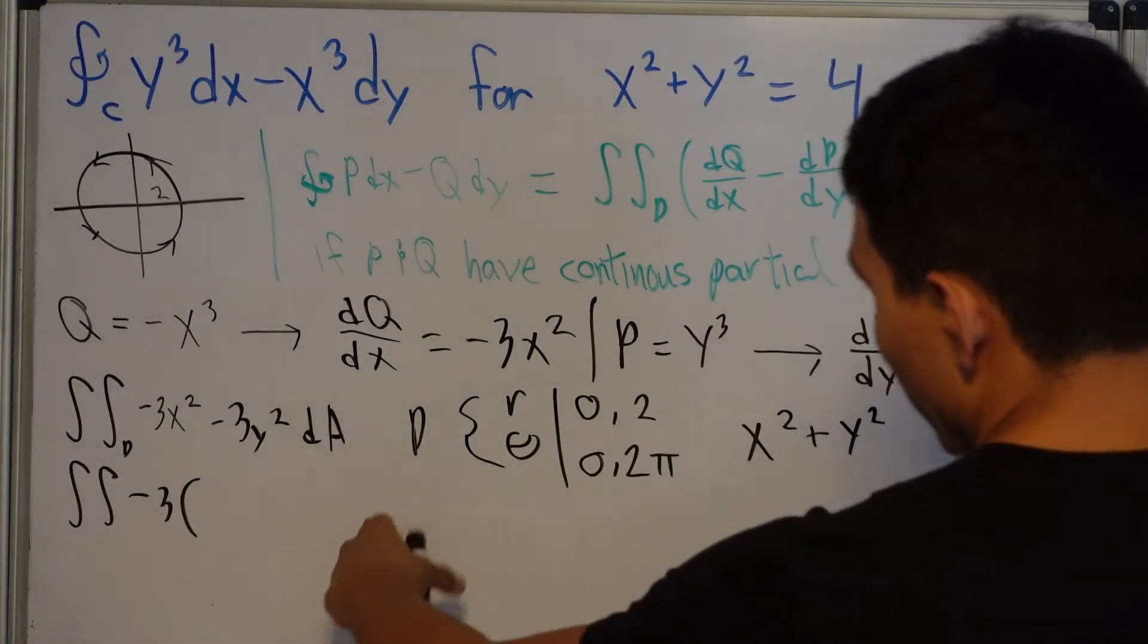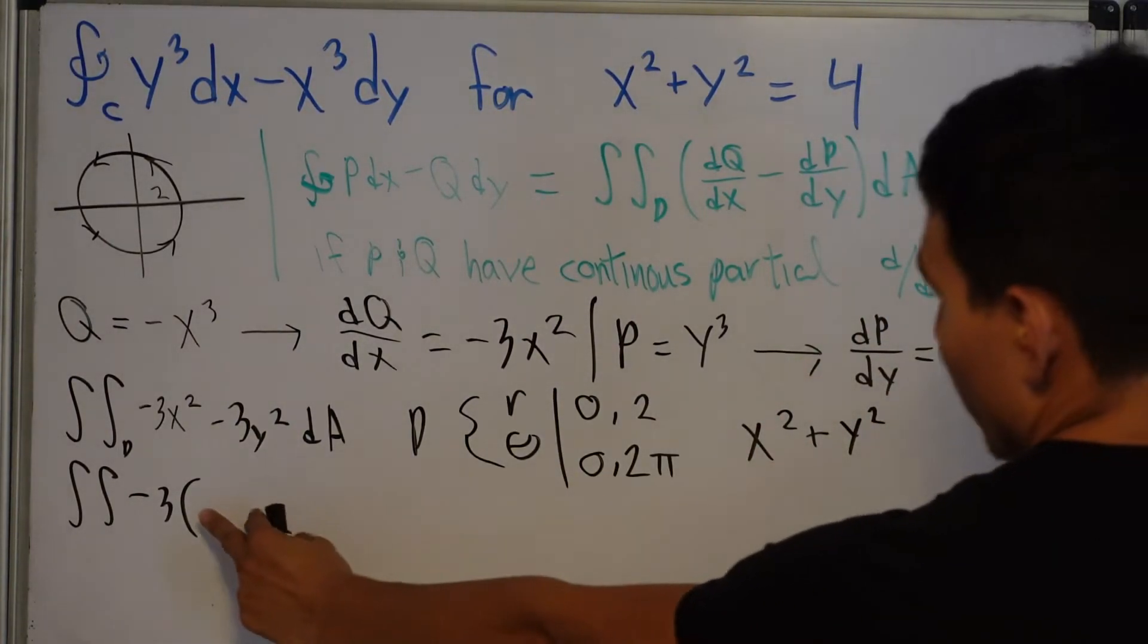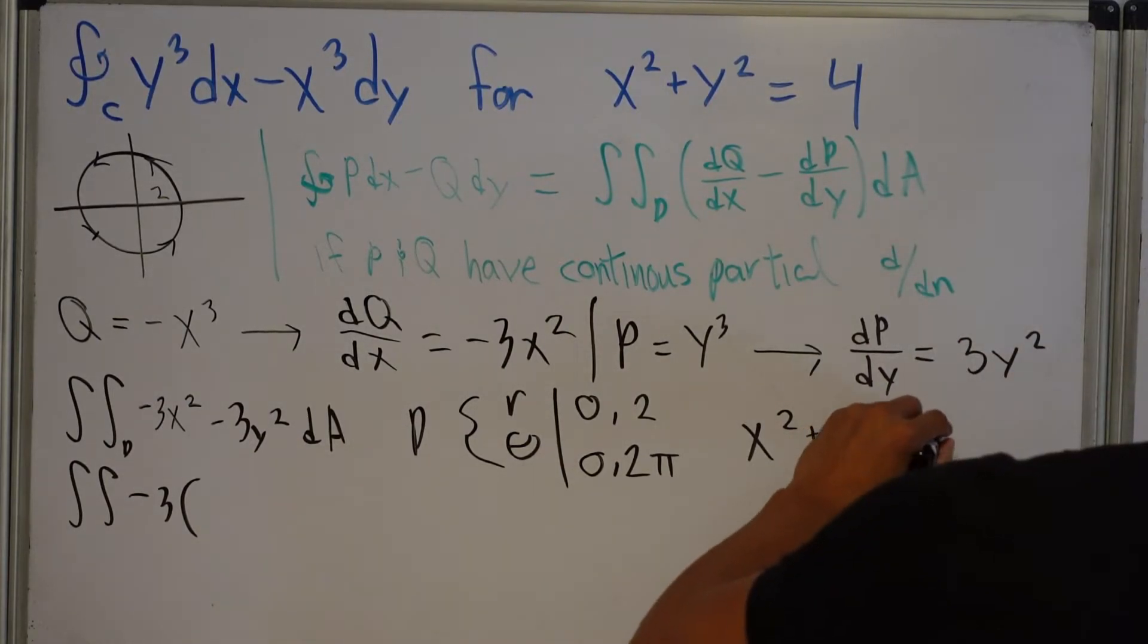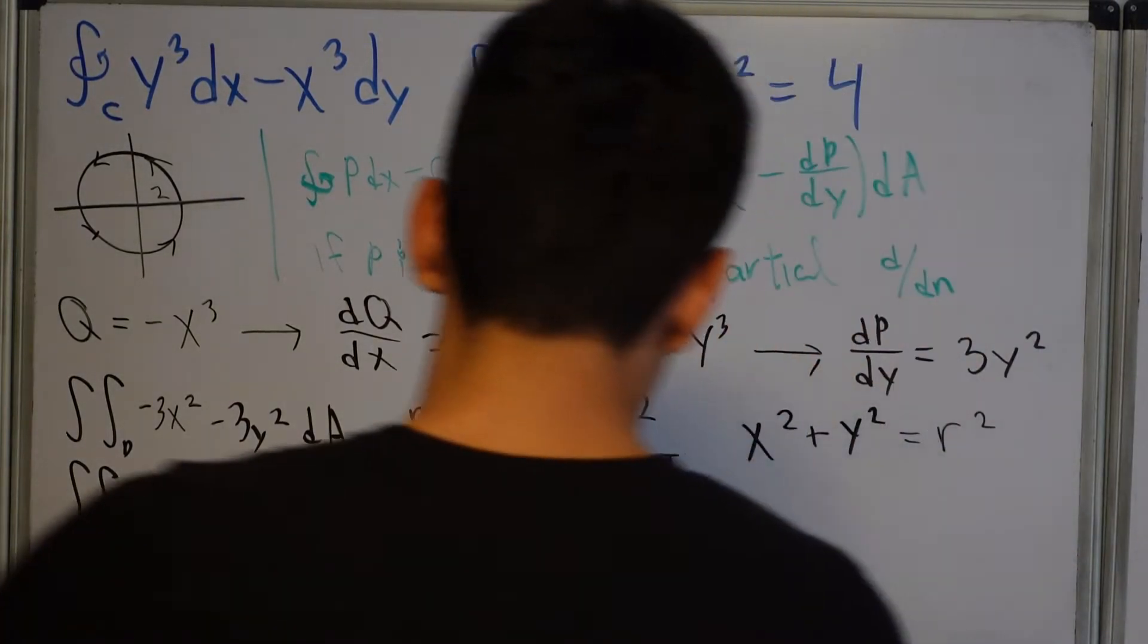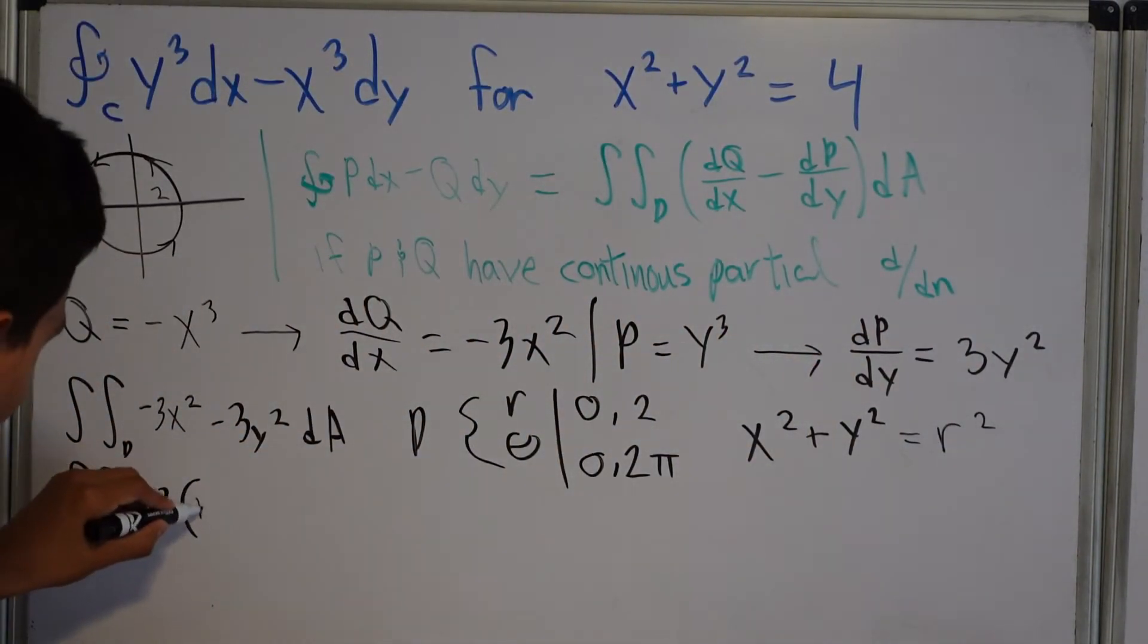And X squared plus Y squared, my bad. If we factor out the negative 3, we get X squared plus Y squared, right here. Well, that's all equal to R squared, right? This is just our classic polar formula stuff that we know.